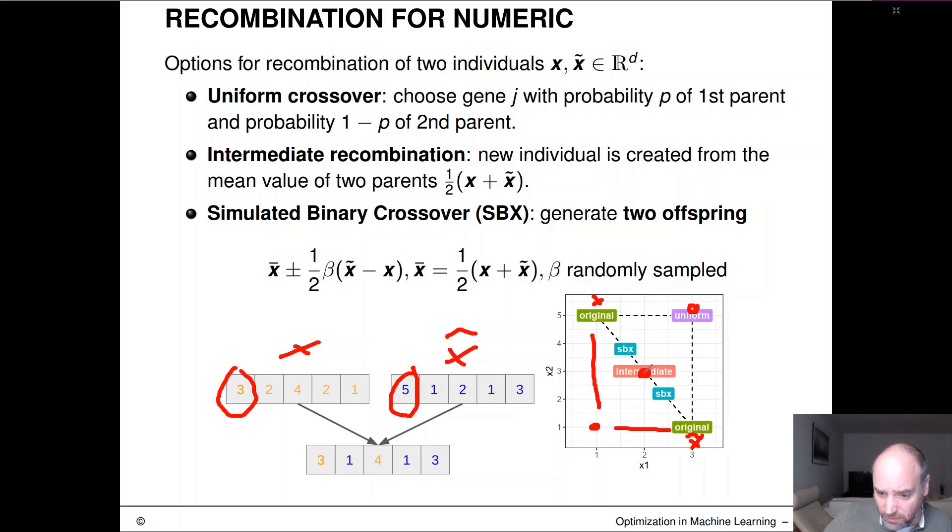Not somewhere, exactly here on the middle of the connecting line between x and x tilde. And there's also what is called SBX, simulated binary crossover. That's just a complicated name and EA terminology for generating a convex combination between x and x tilde. So in a certain sense that generalizes the intermediate recombination. And you can see this immediately from the formula.